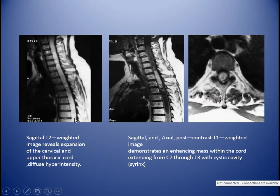The sagittal T2-weighted image reveals an expansion of the cord of the cervical and upper thoracic with diffuse hyperintensity. Sagittal and axial post-contrast T1-weighted image demonstrates an enhancing mass within the cord, extending from C7 to T3, with cystic cavity.